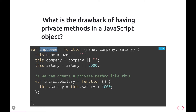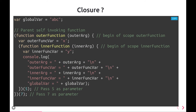Whenever you create objects like employee1, employee2, employee3, employee4, in each and every object this private function gets copied. That is the drawback. Instead, you should create a prototype on top of it, because prototypes use shared memory which can be shared among multiple objects.